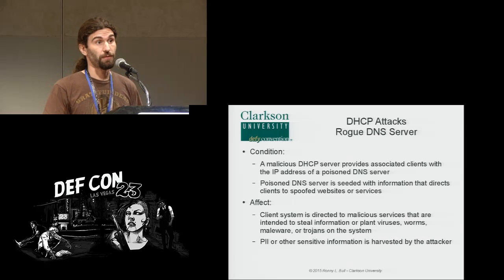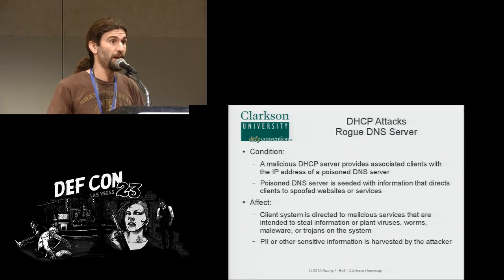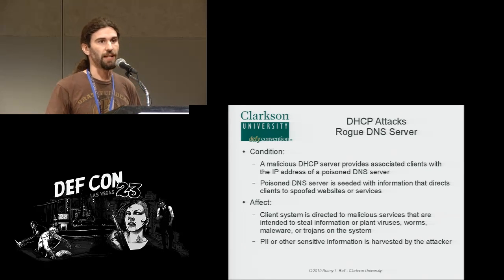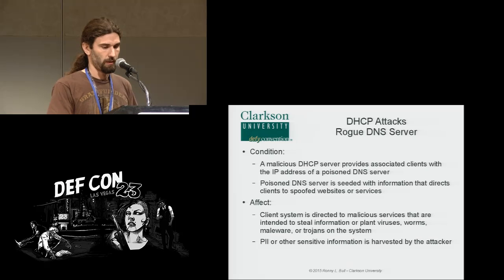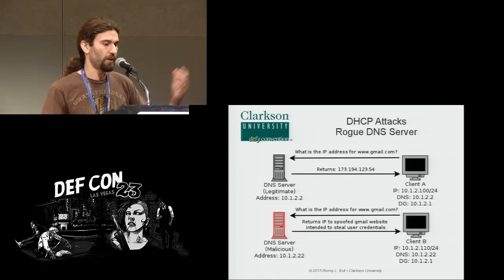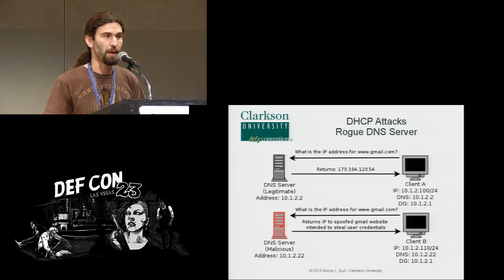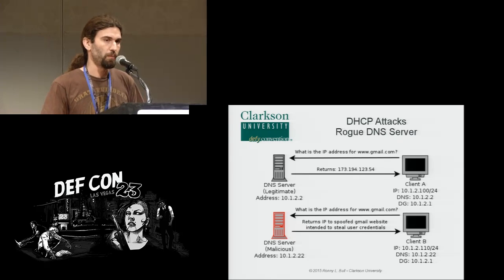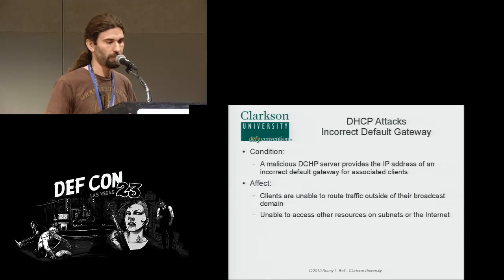A rogue DNS server attack: if we control the DHCP server, we can provide primary DNS server information to clients on that network. Running dnsmasq doubles as a DNS server, so we can provide false or poisoned DNS information to clients — directing traffic to wherever we want it to go, stealing or harvesting information by directing users to web servers we control. For example, a client asks for gmail, the legitimate server returns gmail.com's real IP, but a malicious server can redirect it wherever it wants.